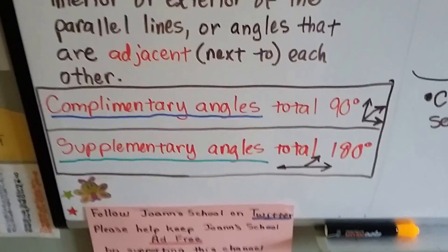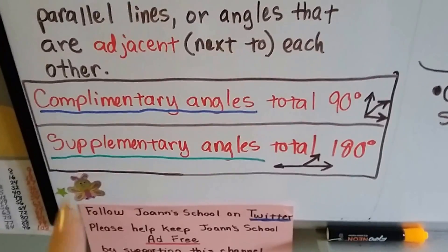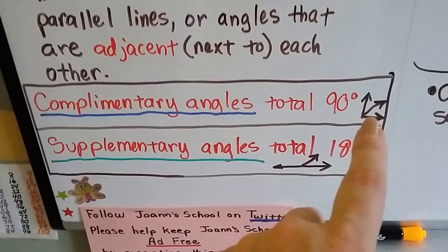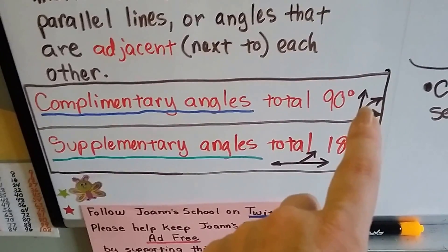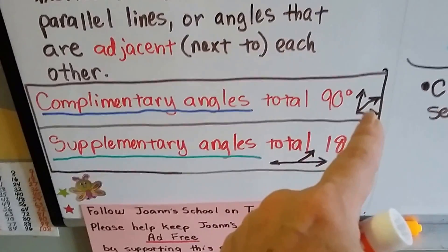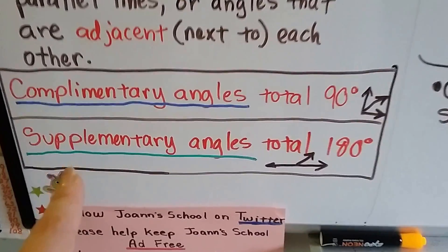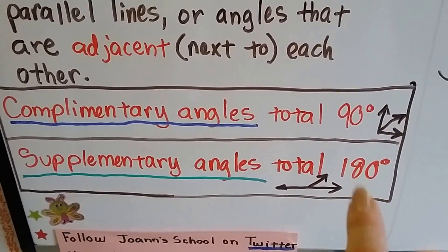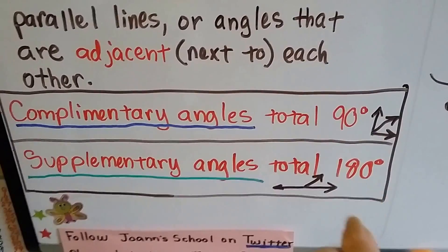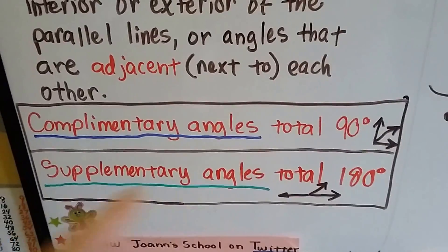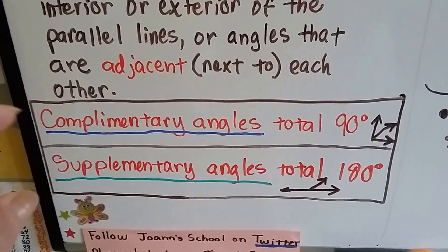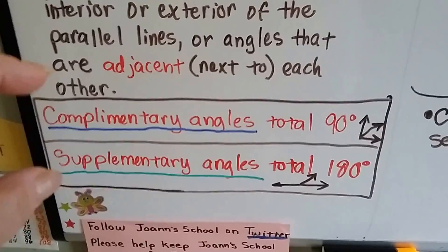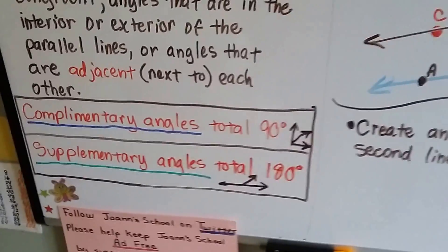You need to write this down if you don't know it already. When you have complementary angles, they total 90 degrees — some angles that when put together total 90 degrees. Supplementary angles, when you add up their degree measures, total 180 degrees, and that would be a straight line. If you can remember these two things, your life is going to be a lot easier doing geometry because a lot of things fall back on complementary and supplementary angles.